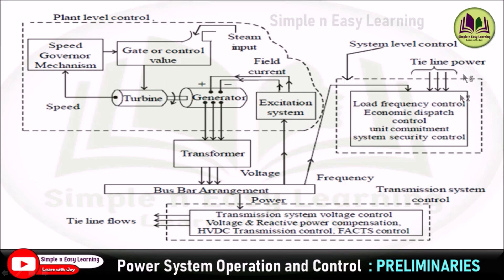Now we are going to see about the system level control. The first one is load frequency control — specifically, secondary automatic load frequency control. In the secondary ALFC control, the frequency sensor senses the frequency of the bus bar and this frequency is compared with the tie line power frequency in the signal mixer. The output of the signal mixer is the error signal called area control error (ACE). This area control error is sent to the speed changer through an integrator, and the speed changer gives the reference speed to the speed governor.